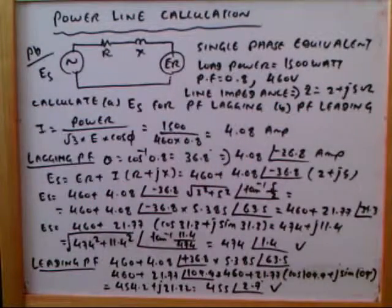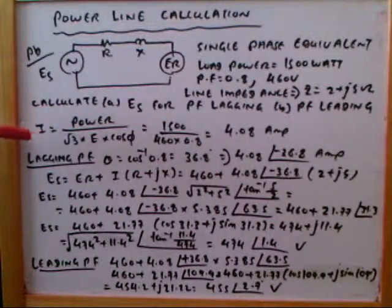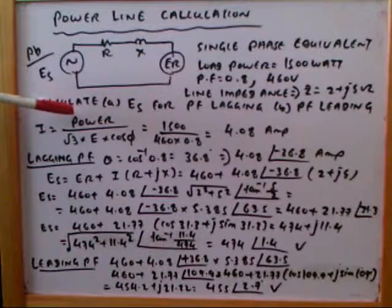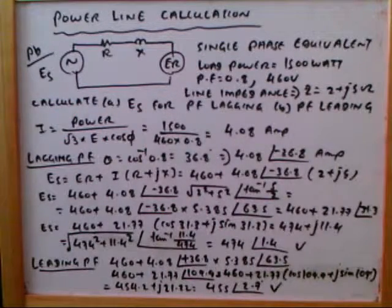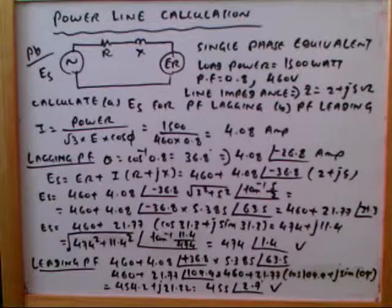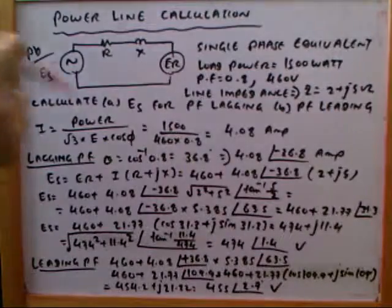First we calculate the current. Current is power divided by root 3 times E times cos theta. This is for three phase equivalent.